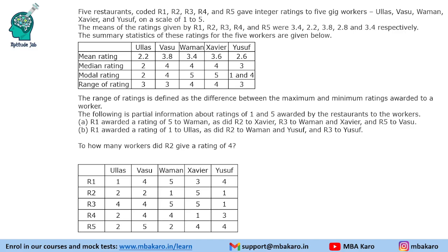How many workers did R2 give a rating of 4? R2 never gave a rating of 4, so the answer is 0. What rating did R1 give to Xavier? R1 gave a rating of 3 to Xavier.